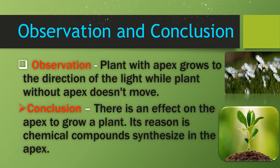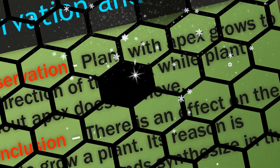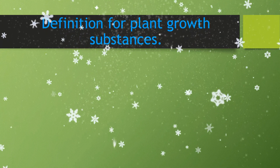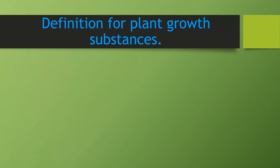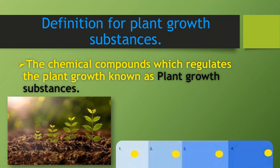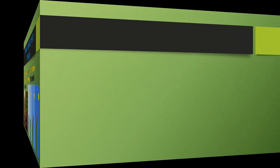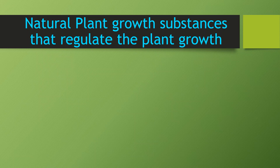Plant growth substances are the chemical compounds which regulate plant growth. In the first diagram, you can see the equal distribution of plant growth substances at the apex. The second and third diagrams show the displacement of plant growth substances in the opposite direction of light. Finally, you can see an increase in cell growth at the site where there is a high concentration of plant growth substances. There are five types of plant growth substances.